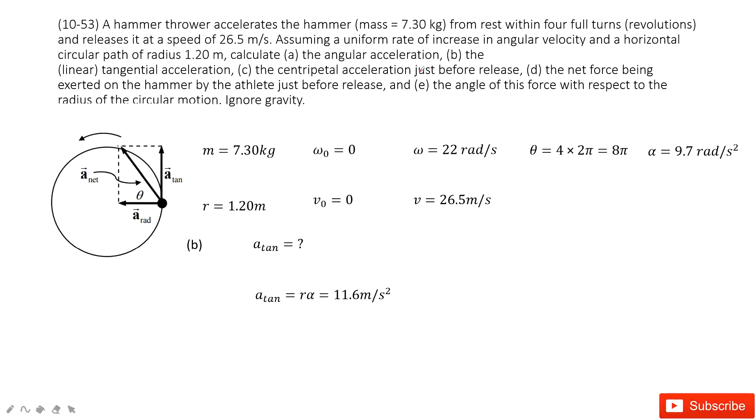The second one asks us to find the linear acceleration. Linear acceleration is easy because we just found the angular acceleration is 9.7 radians per second squared. So the linear acceleration is just r times alpha.